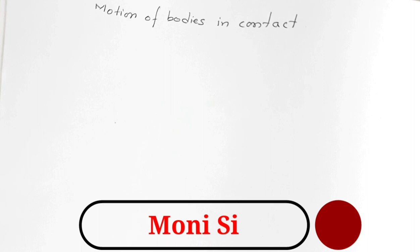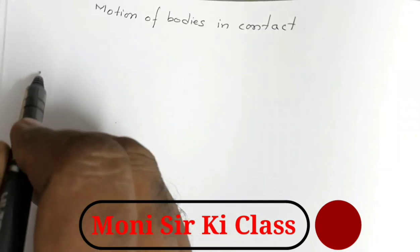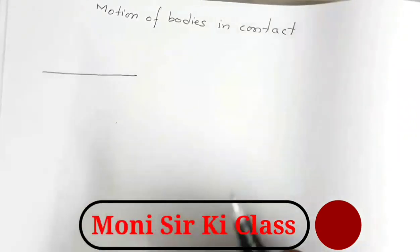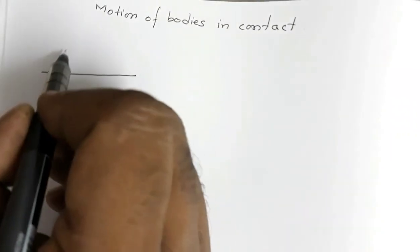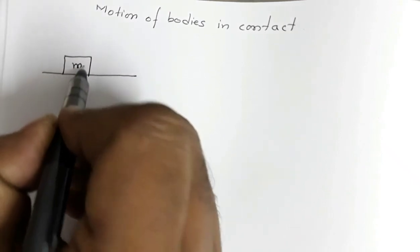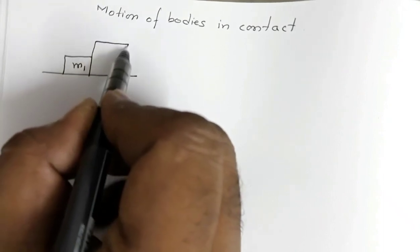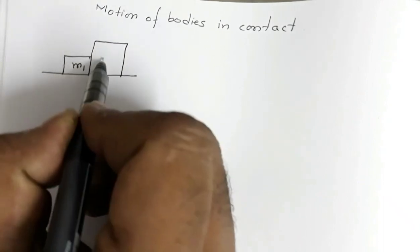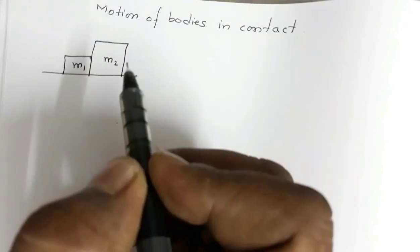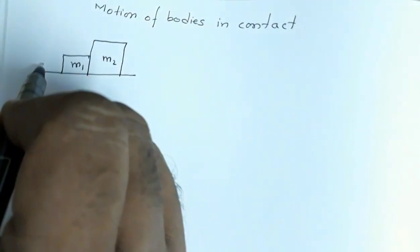Hello everyone, welcome to my channel. In this video I am going to discuss the topic of motion of bodies in contact from the chapter Laws of Motion. Suppose this is a horizontal smooth surface, and this is a block of mass m1 in contact with another block of mass m2.